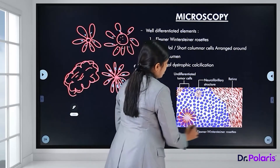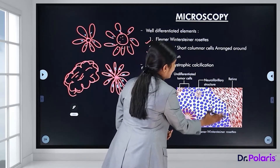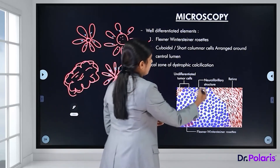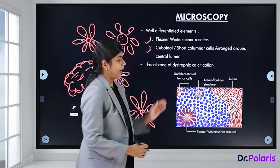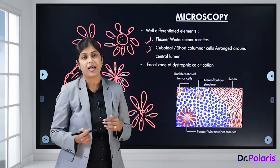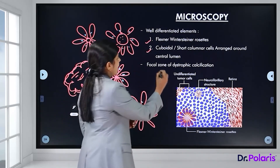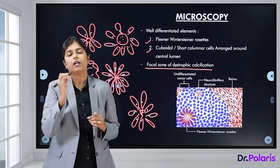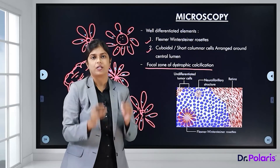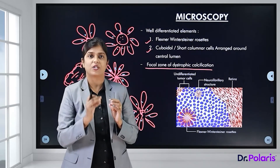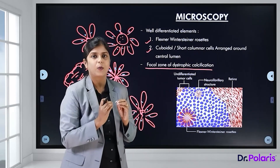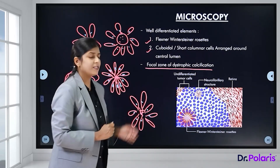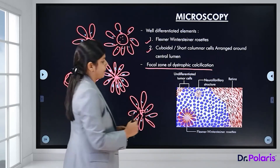Retinoblastomas also show focal zones of dystrophic calcification — the presence of calcification in dead or necrotic tissue — which is commonly seen in retinoblastomas.